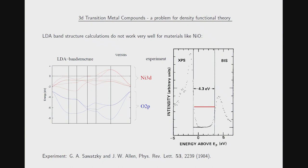A frequently cited example is nickel oxide. Here you see the LDA band structure, and this predicts the material to be a metal, where the Fermi surface cuts into these bands. Whereas in experiment, this material is an insulator with a band gap of four electron volts. It is widely believed that the reason for this is the strongly localized nature of the transition metal 3D shell.